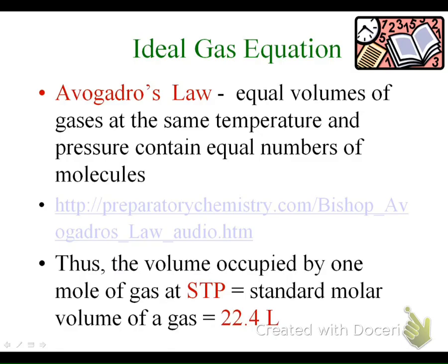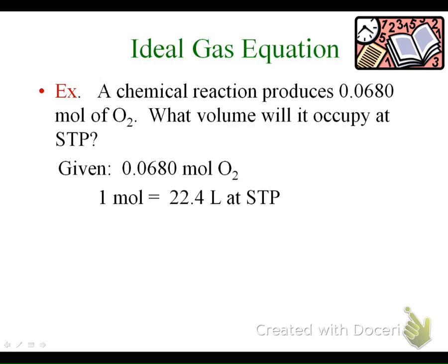Here's an example. A chemical reaction produces 0.0680 moles of oxygen. What volume will it occupy at STP? Now we can learn how to do some gas stoichiometry. You've actually done this a little bit with the water lab already, where you figured out how many liters you created.